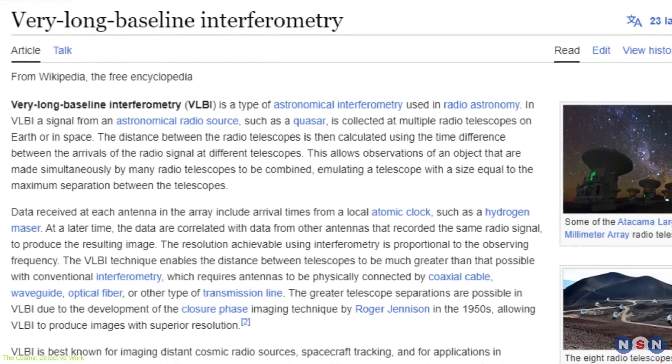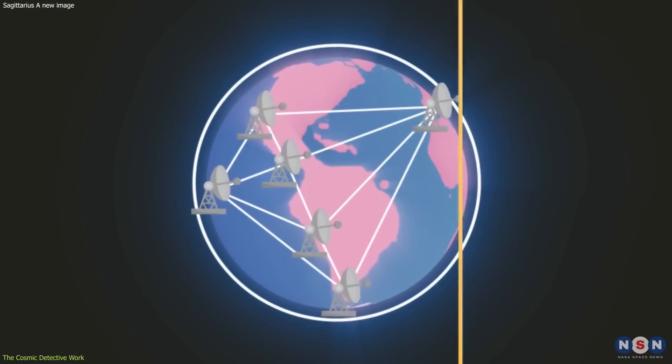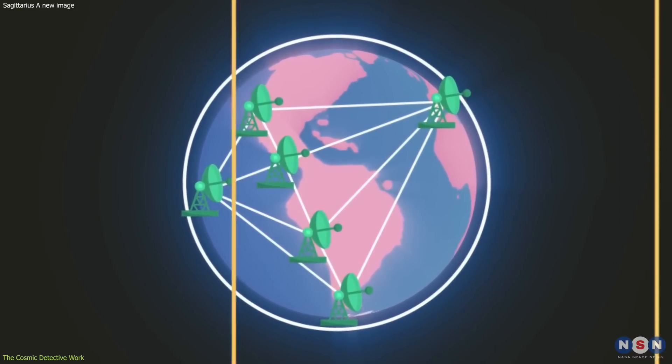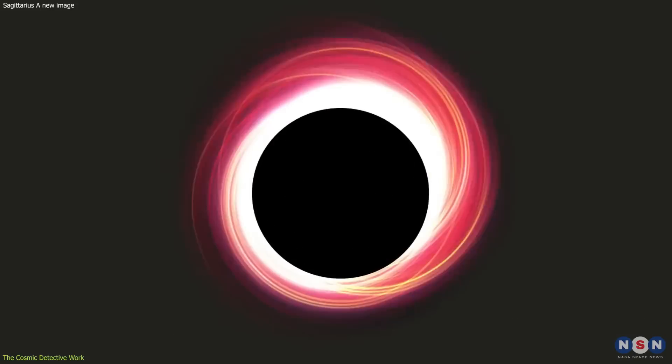This technique, known as Very Long Baseline Interferometry, relies on the precise timing of signals received by each telescope to construct a detailed image. It's akin to assembling a cosmic jigsaw puzzle, with each piece arriving from a different corner of the Earth.